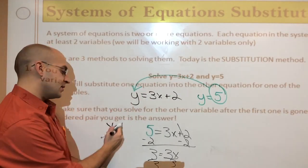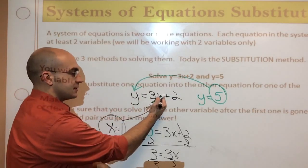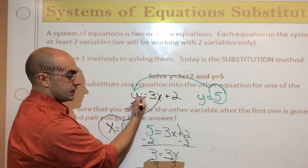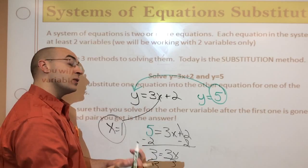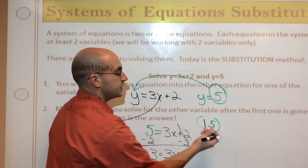We already know y equals 5, but let's just plug it back in to see if it works. So, I'm going to put this x equals 1 right back into this equation, right? So, 3 times 1 is 3, plus 2 is 5, which we already know. The answer, the ordered pair for this equation, or this system, is 1 comma 5. Done.